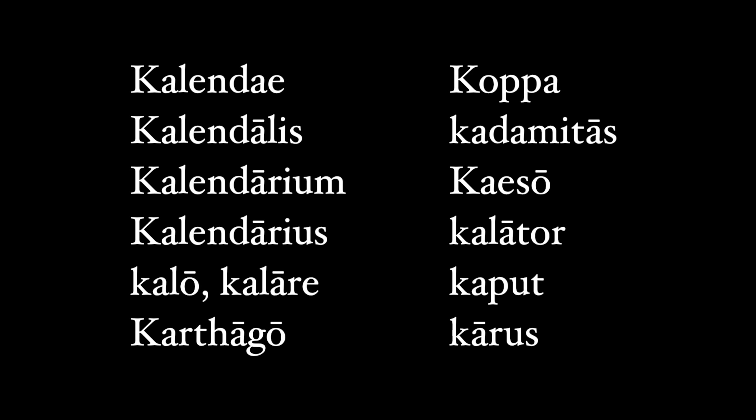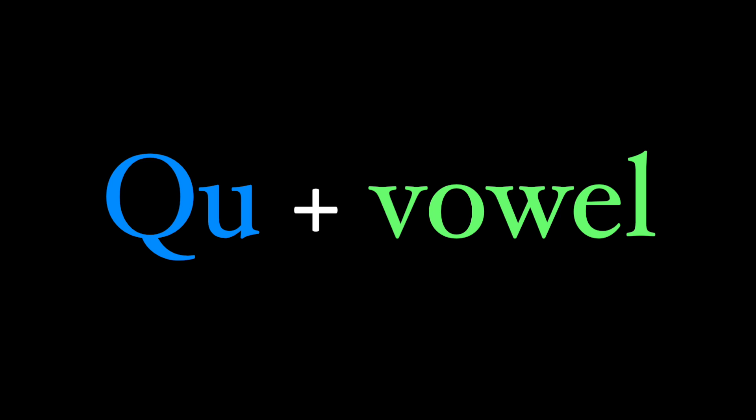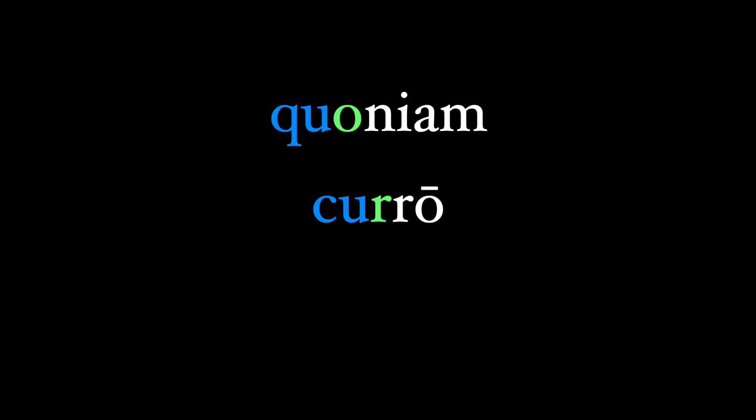Looking back at the words from our dictionary that begin with K, they are all followed by an A — almost always by a short A — except for the word Koppa, which is a Greek loanword. Over time, this distinction between C and K became lost. Instead of K being used just for words with the next letter being an A, C became used for all these words. Q remained only in places where a vowel followed the U, as the QU sound persisted in Latin. So quognam keeps the Q because of the O, but curo is a C because the U is not followed by a vowel. That's also why the word cum was, in Old Latin, sometimes written with a Q, because it was followed by the vowel O.